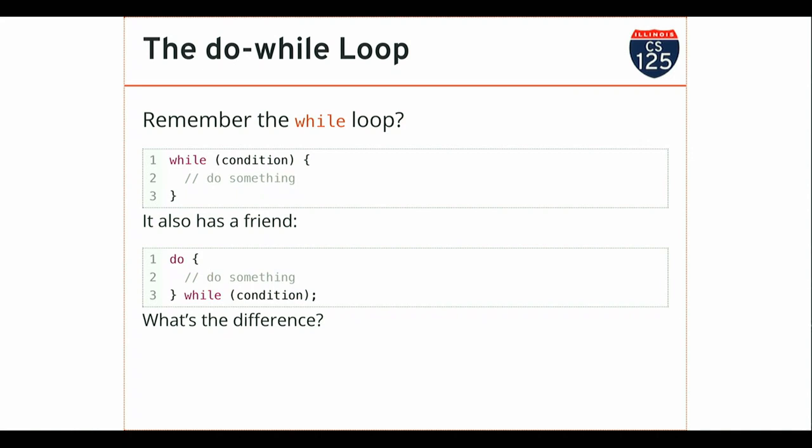There is a variant of the while loop called the do-while loop. It's got two keywords: a do statement that opens up a block, and then at the end of the block, the while condition. So the condition I'm checking has moved to the bottom, and the way I open this looping construct is by saying do and then providing a block of code.